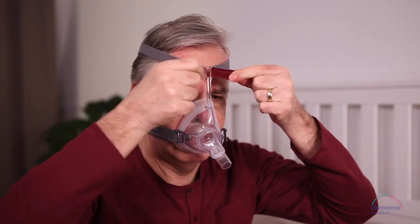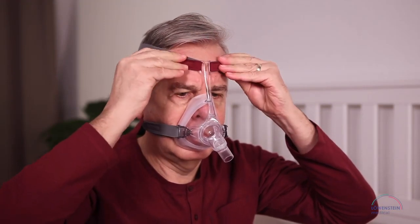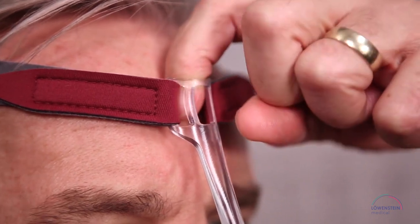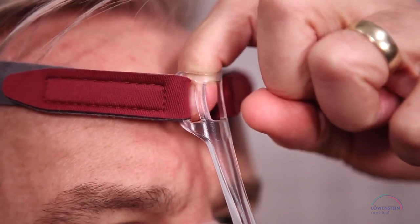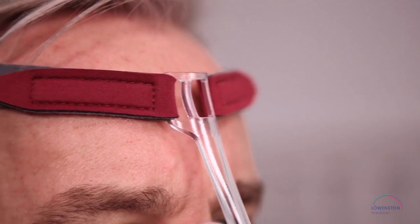Now adjust the upper hook and loop tabs. The same applies here, as loose as possible. Here's a little tip: the forehead support lightly touches your forehead or not at all.